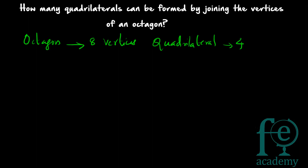But in case of a quadrilateral, A, B, C, D and D, C, B, A are representing the same quadrilateral. So here it is a case of combination. Then what is the total number? 8 vertices are there and you are taking 4 at a time. So your solution will be 8C4 — total 8 vertices, taking 4 at a time.